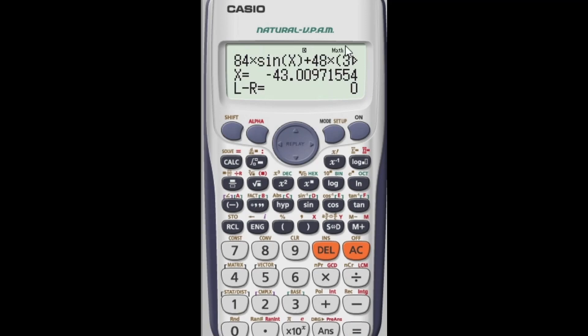It may be taking some time, then the equation will be getting solved. Here it is showing L minus R, which means left-hand side minus right-hand side of the equation equal to 0. For the value of x equal to minus 43.0097, which means this particular equation is satisfied for the value of x equal to minus 43.00. So, here you go.